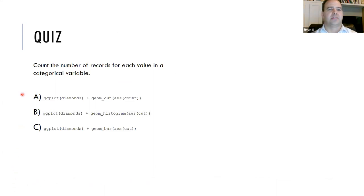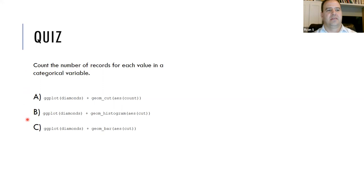Here's quiz question number one — I think there are four or five of these. If we want to count the number of records for each value in a categorical variable, which one of these is the right way to do it? They all start with ggplot diamonds. Then you have geom_col, geom_histogram, and geom_bar.